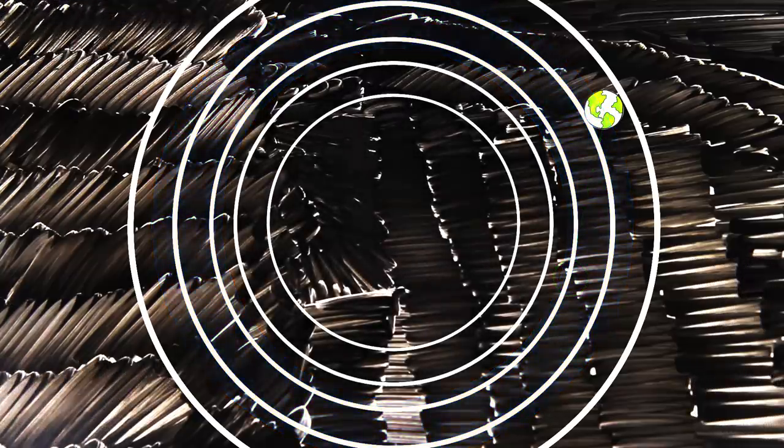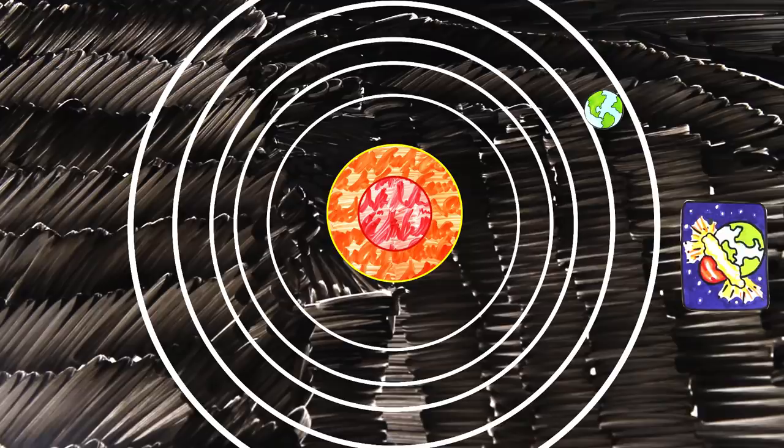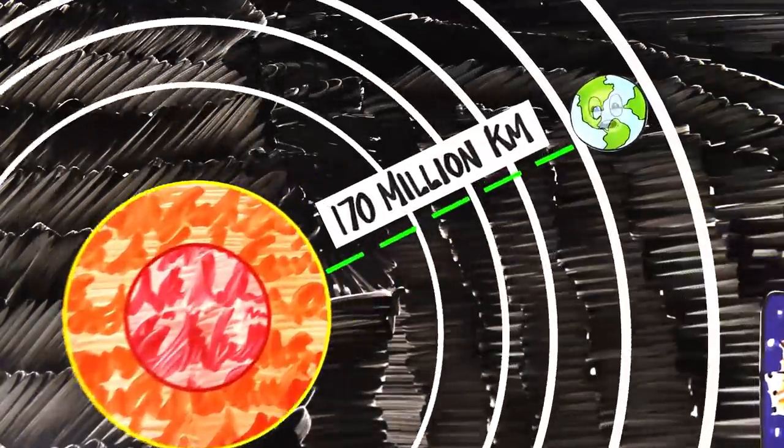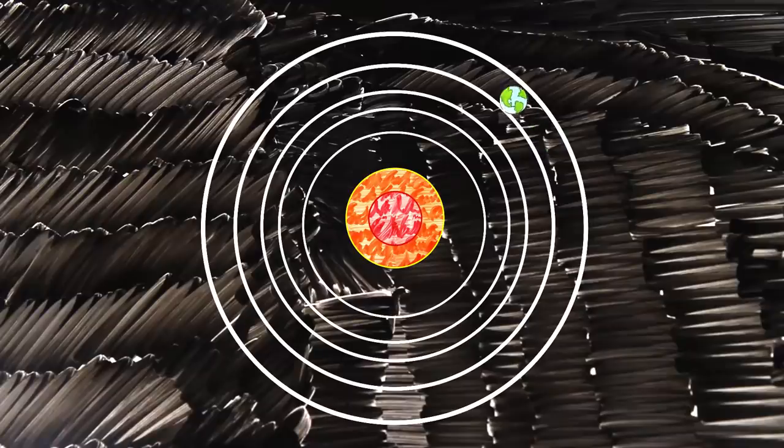So, what would happen if after a month the sun suddenly switched back on? Assuming we haven't crashed into any other planets, or had their own gravity impact our trajectory, we're now roughly 170 million kilometers from the sun. And it turns out our velocity isn't quite fast enough to escape the sun's gravity at this distance, so we'd be pulled back into an elliptical orbit, though a much wider one than before.